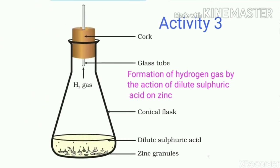In Activity 3, we will see the action of dilute sulfuric acid on zinc. First, take a few zinc granules in a conical flask or a test tube. Then, add dilute hydrochloric acid or sulfuric acid to this conical flask or test tube. We should handle the acid with care.